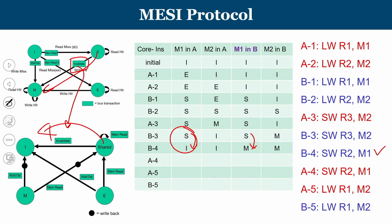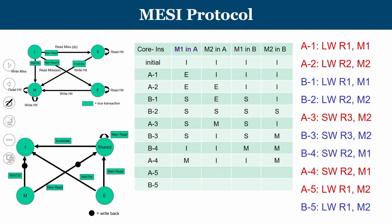A4 is a store operation on M1. M1 in A is currently in the I state. A4 places a read-with-intention-to-modify (RWITM) on the bus, causing an I-to-M transition for A's M1. B was holding M1 in the M state and sees this request, so B's M1 transitions from M to I.